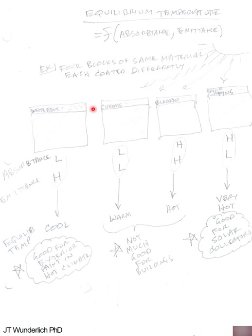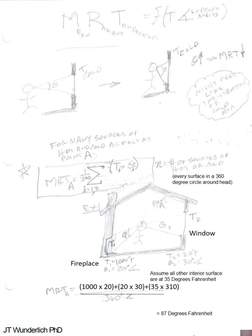Different types of materials and the balance between absorptance and emittance with different coatings, and how to design for that in different climates. Mean radiant temperature — what it feels like at a point within a building based on the openings and the transmittance of heat through the walls and ceiling, and also sources of heat like a fireplace.